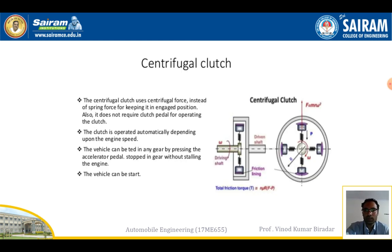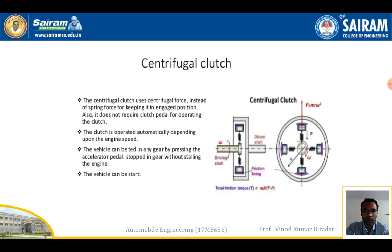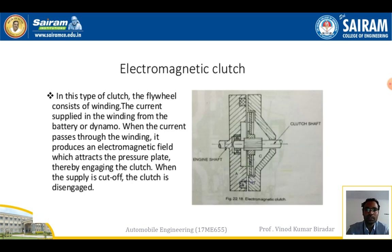Centrifugal clutch: the main use of this clutch is to transfer torque more effectively. A centrifugal clutch uses centrifugal force instead of spring force to keep it in the engaged position. The clutch is operated automatically depending upon the engine speed — as engine speed increases it will engage automatically. The vehicle can start in any gear by pressing the accelerator pedal, and the engine can be stopped in gear without stalling.